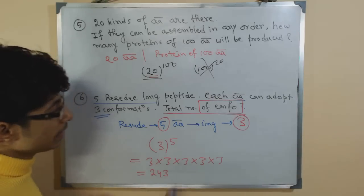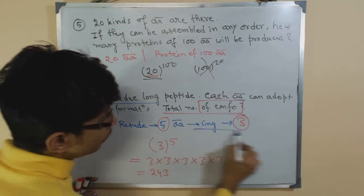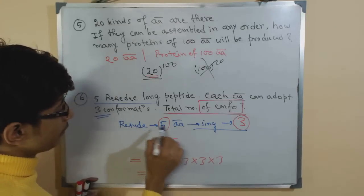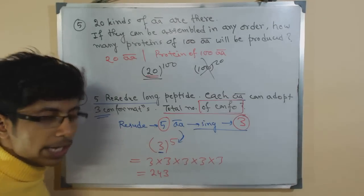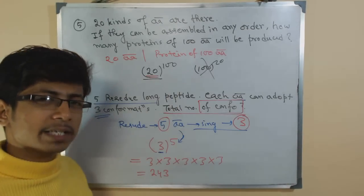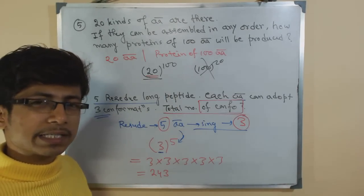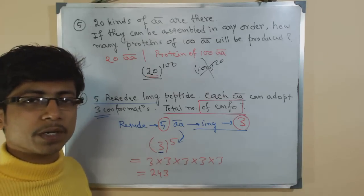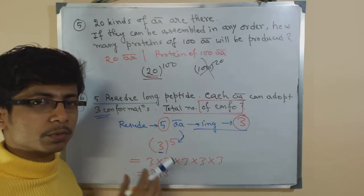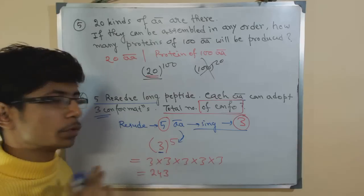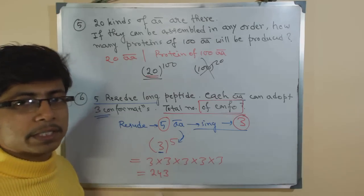It's very easy — the number of conformations goes as the base and the number of amino acids goes as the power, and you get the answer. These questions take very little time; you just need to know this simple idea of how to set up the combinations and probability values, and that's it.